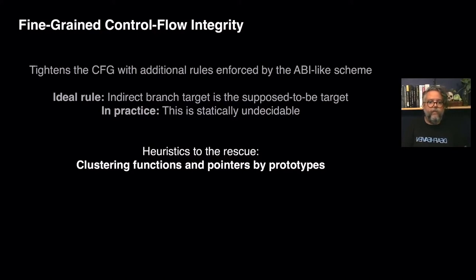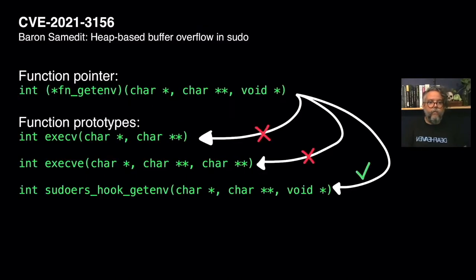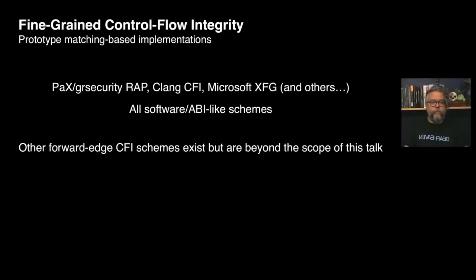The most common heuristic is clustering functions and pointers by their prototypes. Functions have prototypes; function pointers also have prototypes. Thus, whenever an indirect call is taking place, the prototype of the function pointer should match the prototype of the invoked function. Back to the sudo example, if you look at the fn-get-env pointer prototype — it is char-pointer, char-pointer-pointer, void-pointer — it differs from execve's and execve's prototypes, but matches the prototype of sudoers_hook_get_env, which is the function that should be legally invoked.